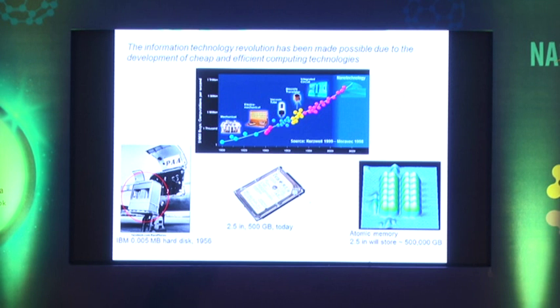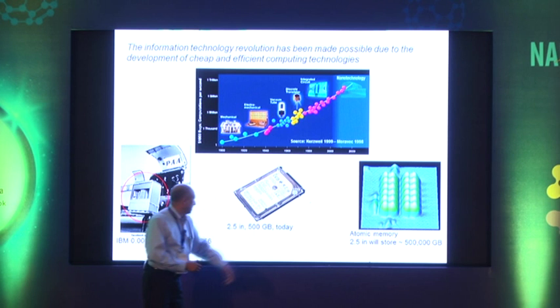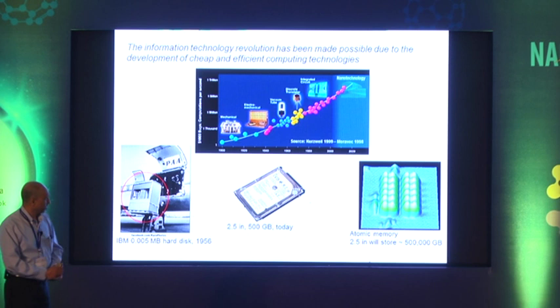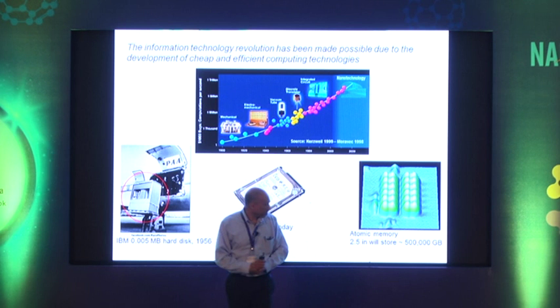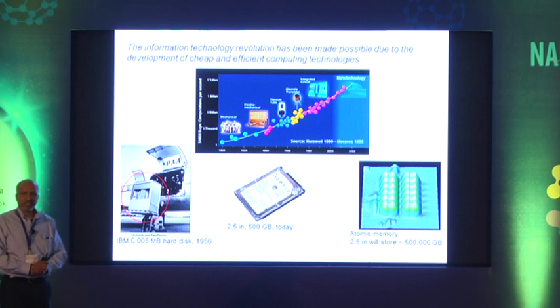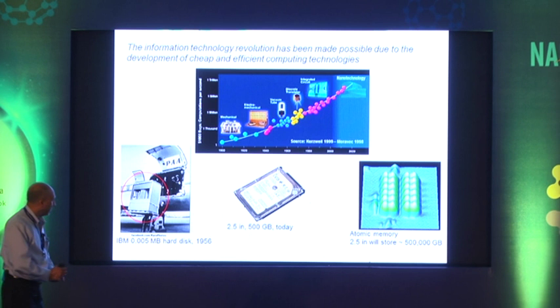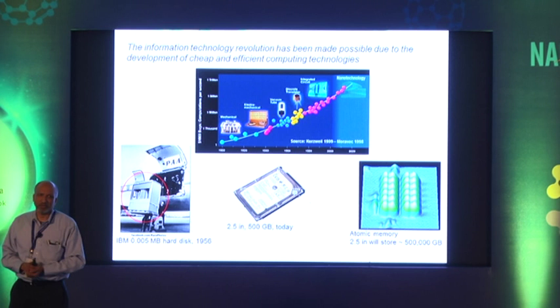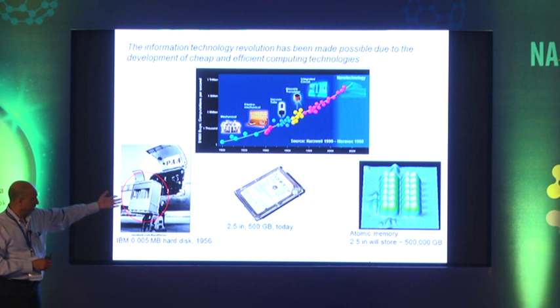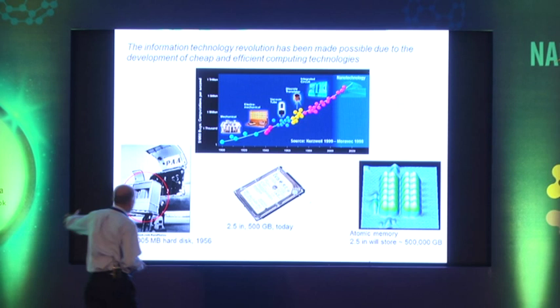This is a 5-kilobyte memory in 1956 — it is almost the size of an aircraft, and this was state-of-the-art at IBM in 1956. This is roughly state-of-the-art today: 500 gigabytes on a 2.5-inch memory — we can all buy this in stores today. And on the right is what one may consider the limits: 12 iron atoms together forming a bit of memory, and 96 iron atoms forming a byte. This means that 2.5 inches could theoretically store 500,000 gigabytes — a fundamental limit for memory storage.